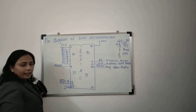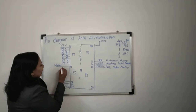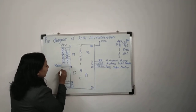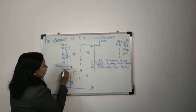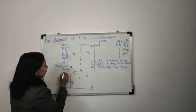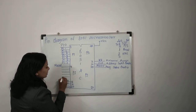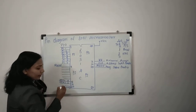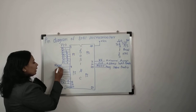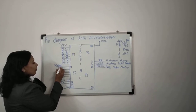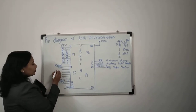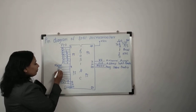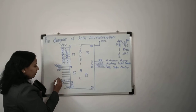Port 3 also has 8 pins. They are labeled P3.0, P3.1, and so on up to P3.7.